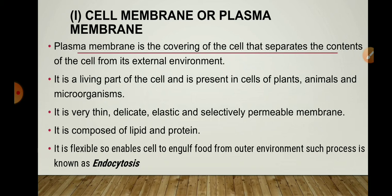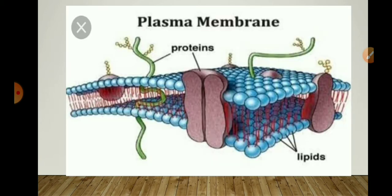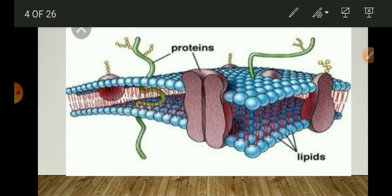For example, amoeba, which is a unicellular organism, captures food by forming temporary finger-like projections called pseudopodia from the external environment. These pseudopodia are formed with the help of the flexible, elastic plasma membrane. This process by which the cell engulfs food from the outer environment is called endocytosis. If we observe the plasma membrane under a microscope, we can see it is made up of a phospholipid bilayer — bilayer meaning two layers of lipids.